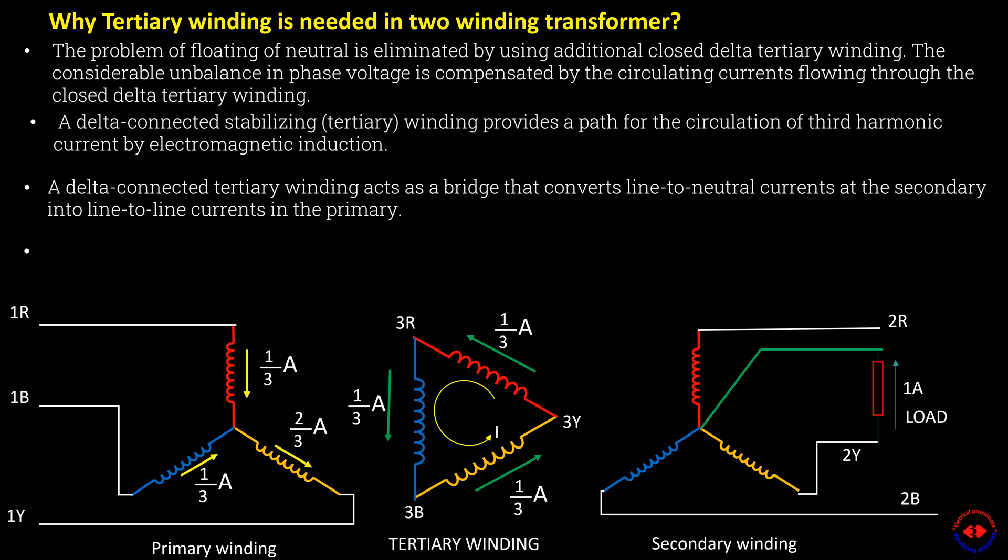The ratio of current division between primary and tertiary is based on the interwinding impedances in most cases.